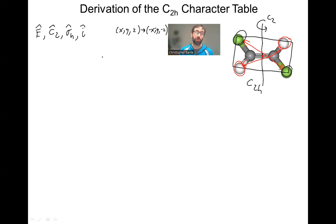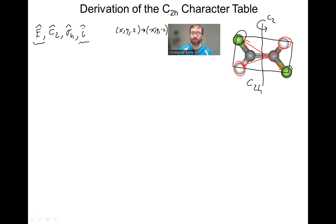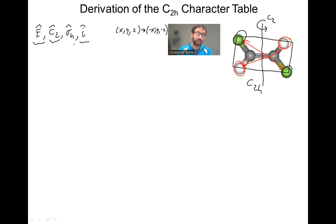These are our only four operations in this point group, and then we have to put them into classes. In this case it's pretty straightforward. Identity and inversion are always in a class by themselves. The rotations sometimes are grouped together, but we only have one rotation, so that's going to be by itself. Same thing with the mirror planes — if you have multiple sigma H's, those might be grouped together. There are rules I go over in many of my other character table derivation videos for more complicated cases. But in this case there's only one mirror plane and all these are different, so they're all going to be separate classes.